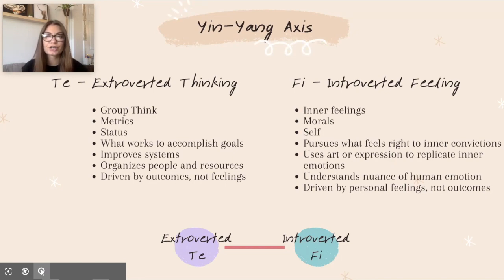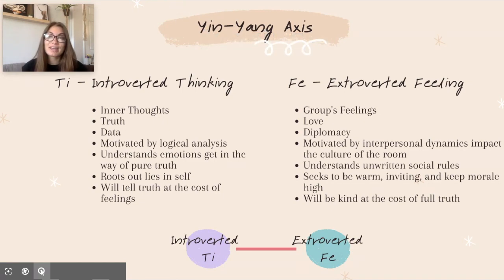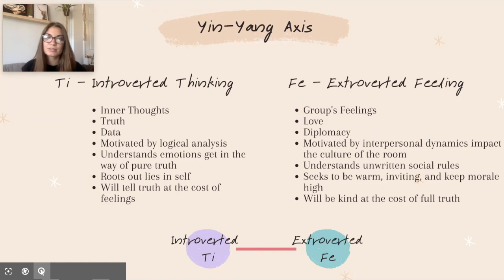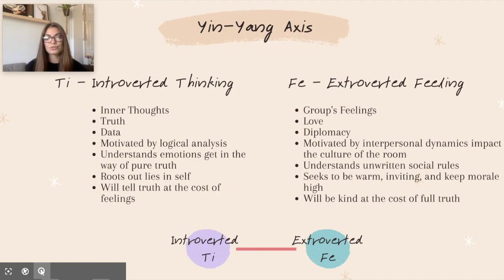The final axis is introverted thinking (TI) paired with extroverted feeling (FE). TI is about your inner thoughts — truth and logical analysis; FE is about the group's feelings, love, and diplomacy. TI is motivated by logical analysis; FE is motivated by interpersonal dynamics and believes it impacts the culture of the room. TI understands that emotions get in the way of pure truth; FE understands unwritten social rules. TI roots out lies within itself; FE seeks to keep morale high and the environment warm. TI will tell the truth at the cost of feelings; FE will be kind at the cost of full truth.